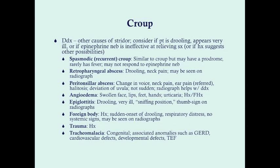The differential for croup includes any other causes of stridor. Consider alternatives if the patient is drooling and appears very ill — in that case, consider epiglottitis. Also reconsider the diagnosis if epinephrine nebulizers are ineffective at relieving symptoms. One important differential is spasmodic croup, which presents similarly with barking cough and stridor but rarely has a fever. The key differentiator is that viral croup responds to epinephrine nebulizers, while spasmodic croup does not.